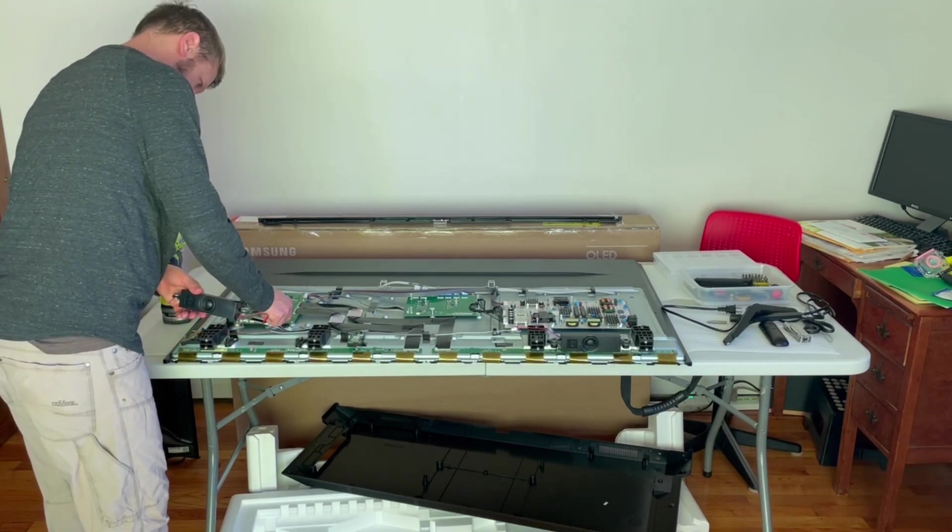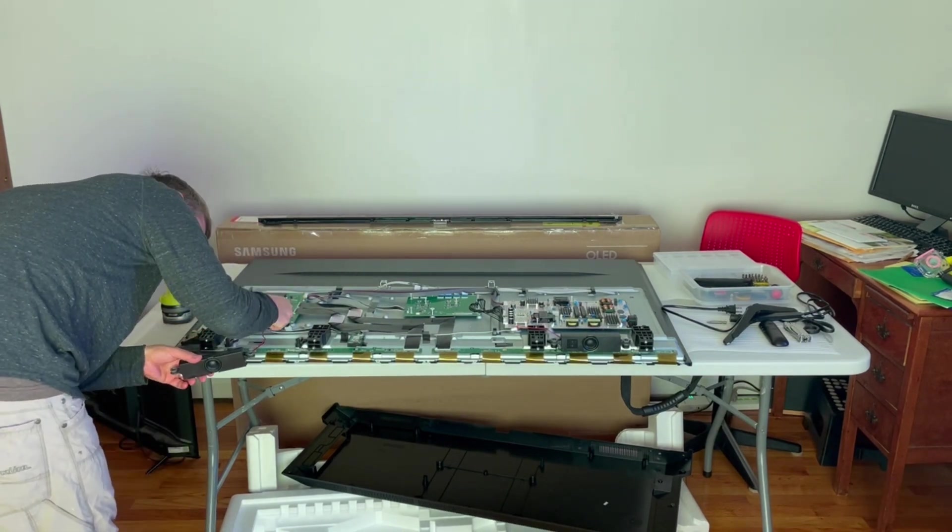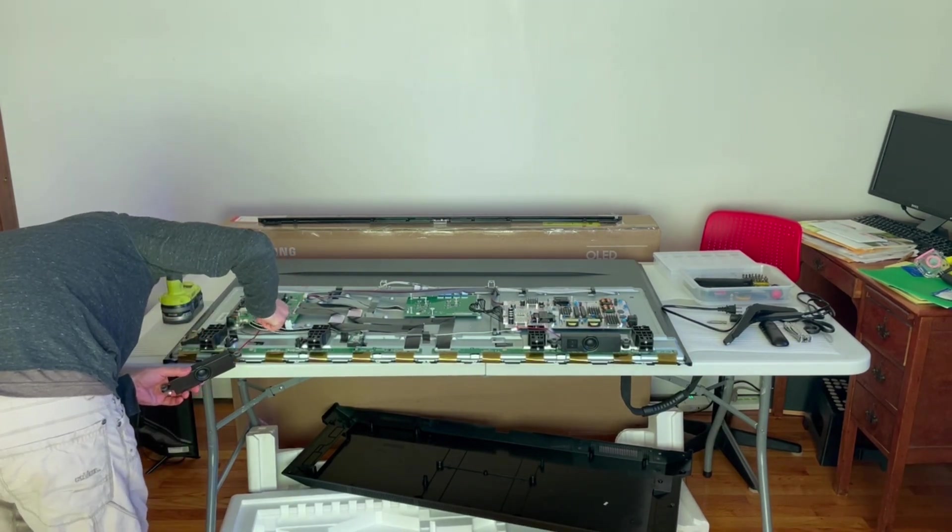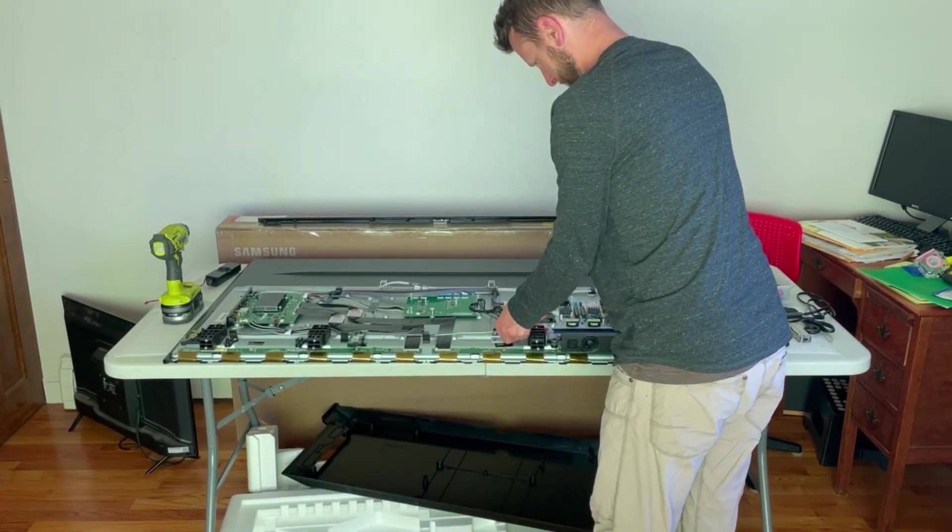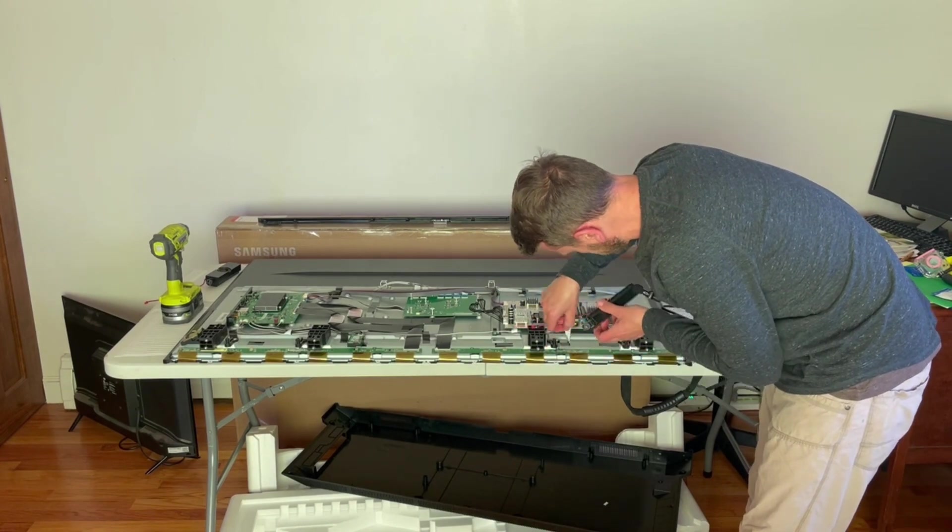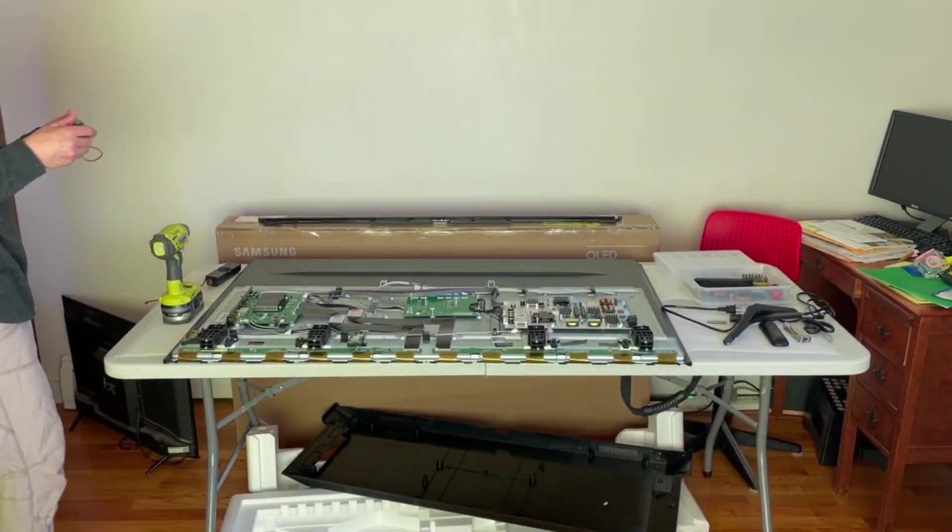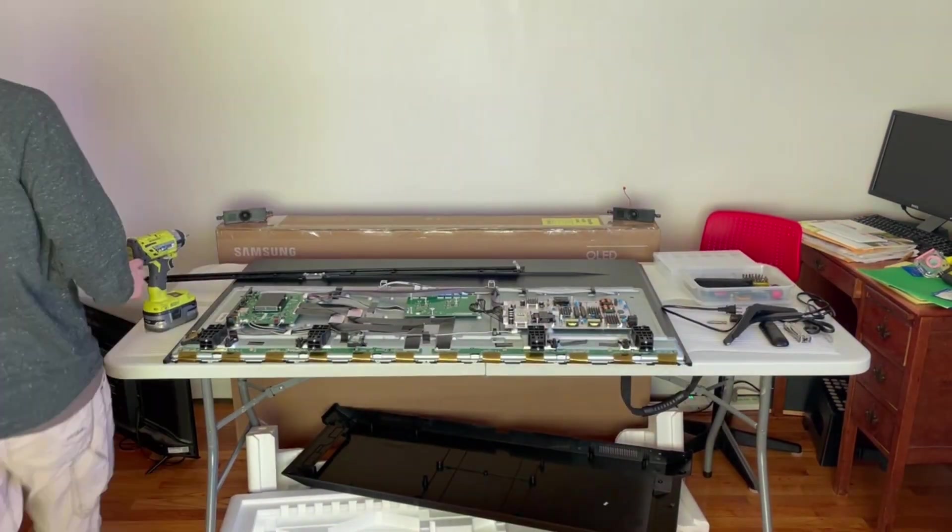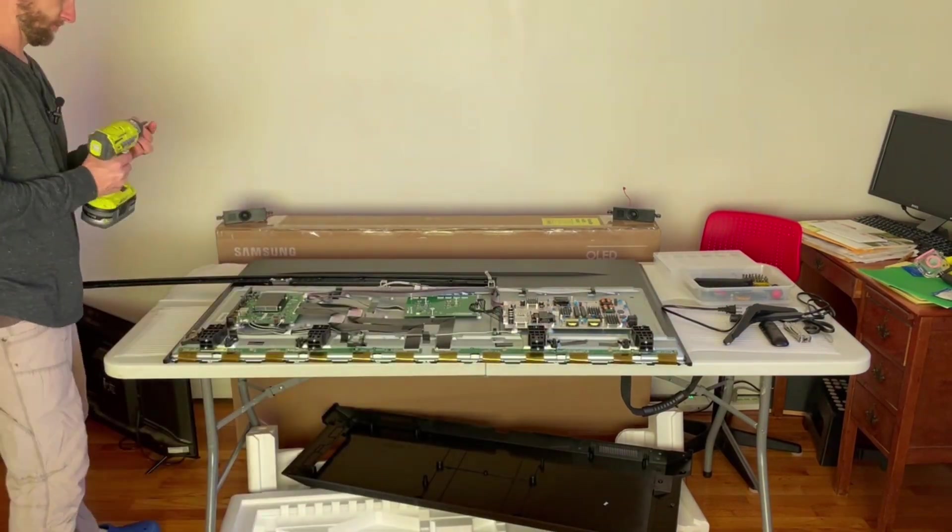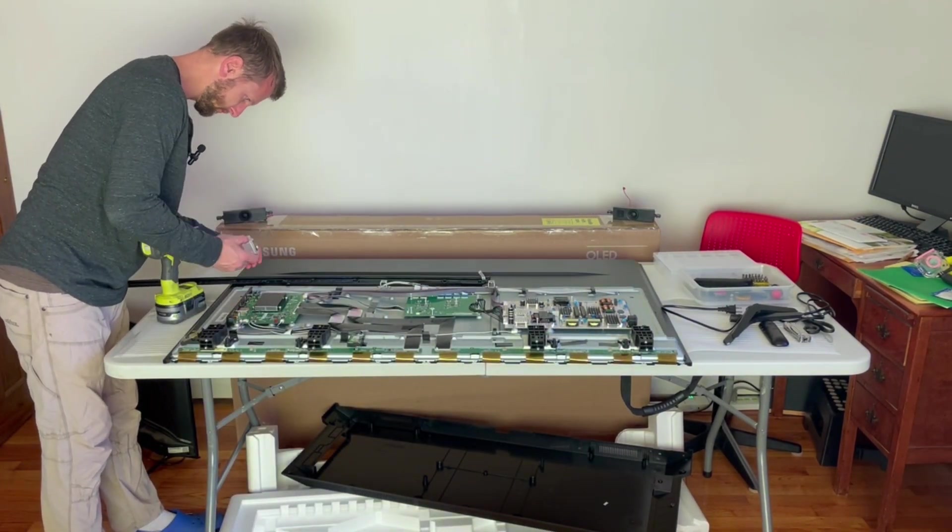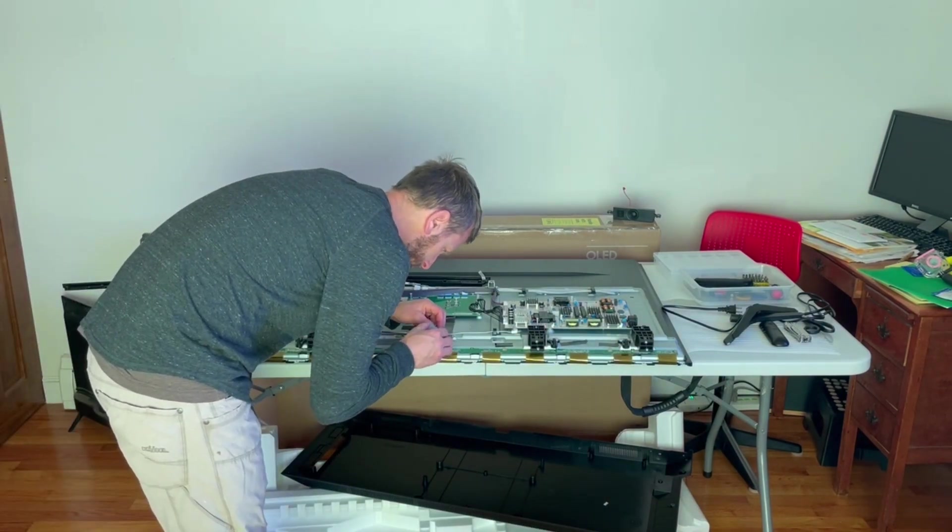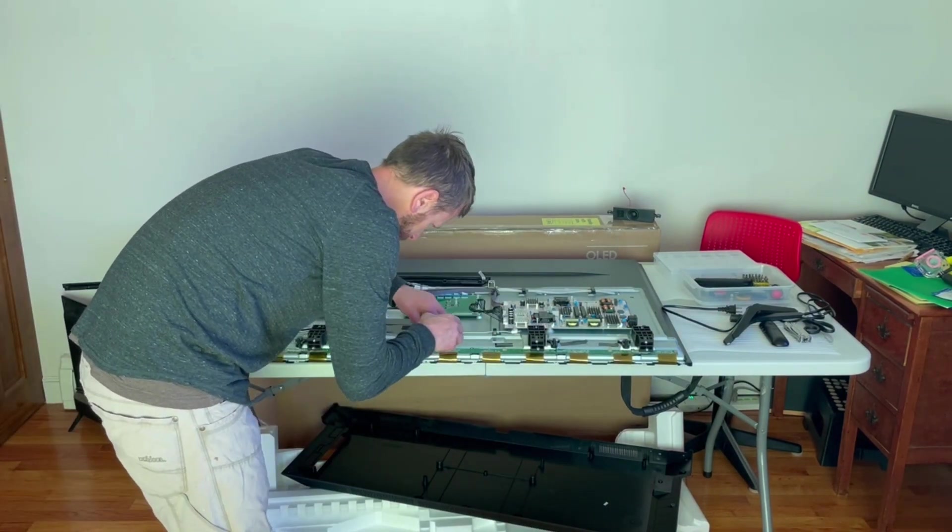I want to take off these speakers here because they kind of get in the way when I keep flipping this over a few times. So we're going to disconnect these speakers. And then we're going to start to get into putting the receiver, the IR receiver for the remote back on so that I can actually communicate with this TV even after I have the LCD separated.